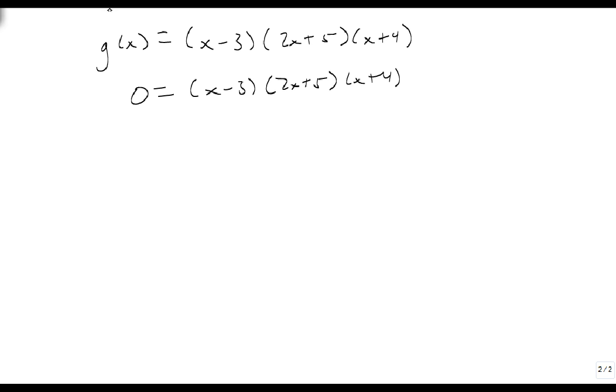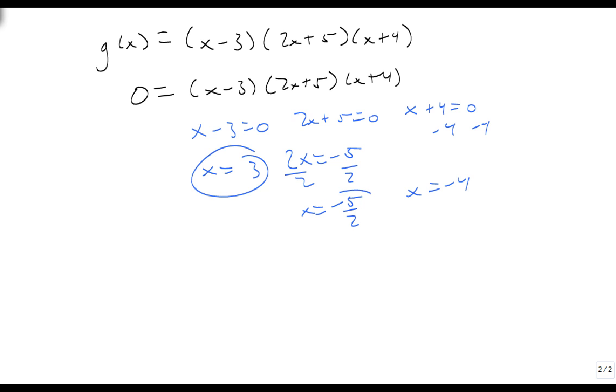That's actually really good news, because now we just solve each of them separately, and that tells me x is 3, 2x is minus 5, divide by 2, x is minus 5 halves, and when we subtract 4 from both sides, x is minus 4. So I have three answers, and three x's total. So I found as many as I was looking for, one per factor.